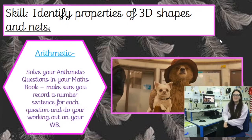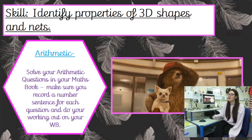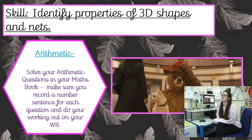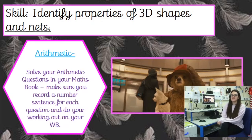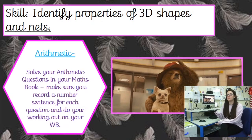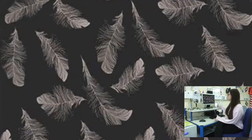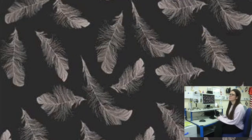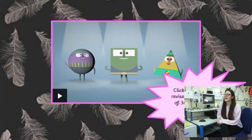Good morning on this miserable rainy Thursday, everyone at home! Today our skill is to identify properties of 3D shapes and nets, following on from our work yesterday. We are going to go back to BBC Bitesize and have a quick revision on the properties of 3D shapes.